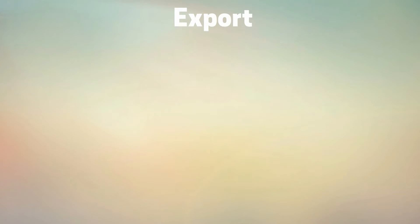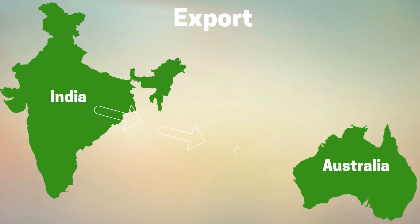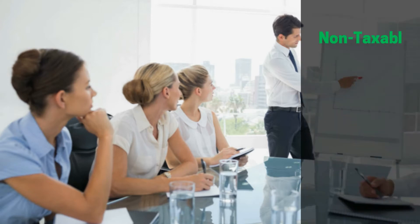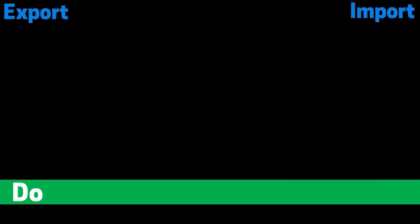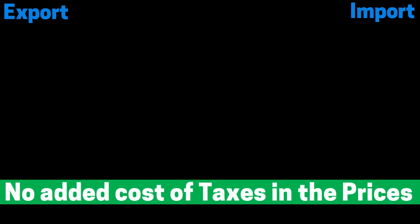In example number four, we'll discuss exports — a situation in total opposite of example three. The manufacturer is located in India and the final consumer to whom the goods are supplied is located in Australia. Here the final place of consumption is located in Australia, which is outside the jurisdiction of Indian taxing authorities. Therefore, such a transaction will not be taxable, which makes exports non-taxable under GST. Analyzing these export and import taxing systems, we can conclude that GST provides a great support system for domestic producers and traders, as making exports non-taxable gives them a competitive edge with no added cost of taxes in the prices of such exported products.